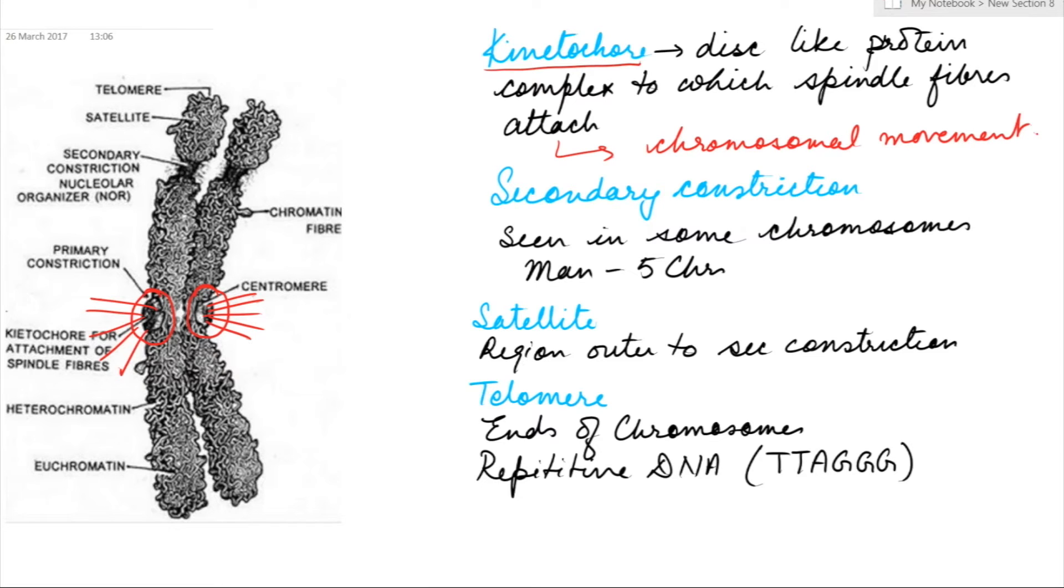Now, in some chromosomes, besides the primary constriction, a secondary constriction can be seen. The secondary constriction is also referred to as the nuclear organizer, or the NOR, as these chromosomes are associated with the nucleolus and they help in the formation of nucleolus at the end of cell division.